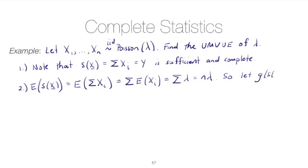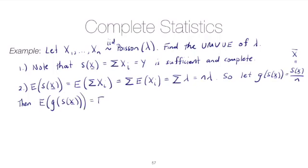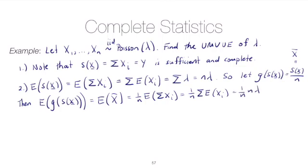We let G(S(X)) equal S(X) over n, which is just X̄, since S(X) is just the sum of the Xi's. Then the expectation of G(S(X)) equals the expectation of X̄, which is 1/n times the expectation of the sum of the Xi's, which is 1/n times the sum of the expectations of the Xi's, which is 1/n times n times lambda, which equals lambda. So G(S(X)) is unbiased — it is the unique unbiased estimator that's a function of the sufficient statistic.